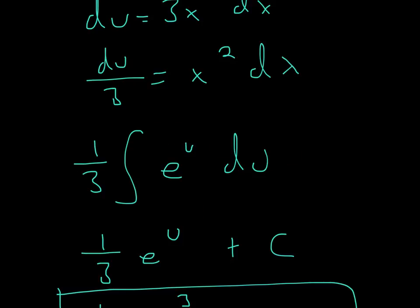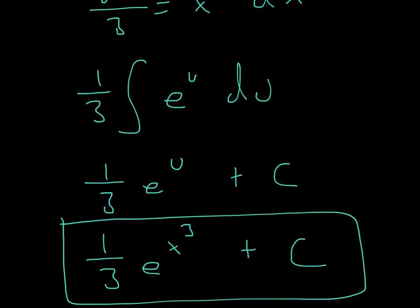Now since we have all of that, we can actually take the integral of this function. So when we take the integral, you just have to memorize this. The integral of e to the u is e to the u. So that's just something you have to memorize. It's just itself. And then we multiply it by 1 third, and then plus C. But we're not done.